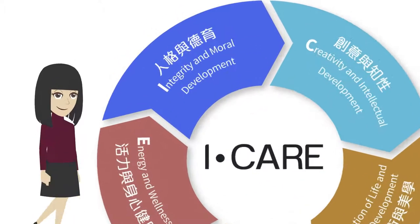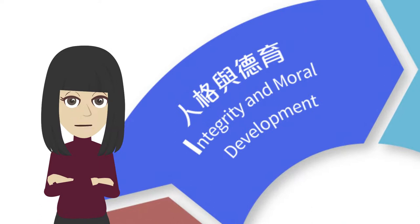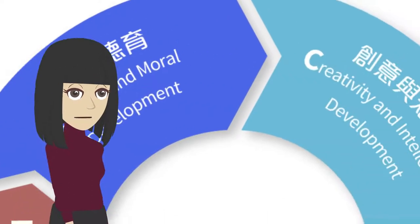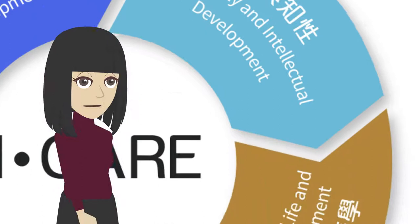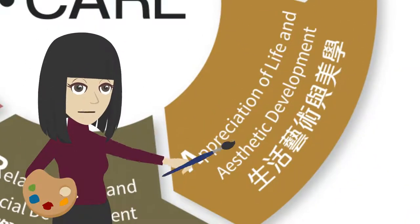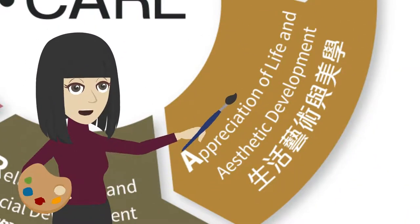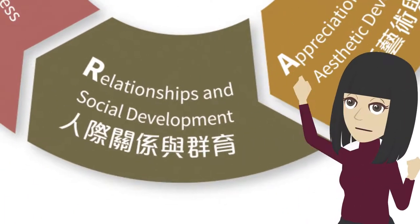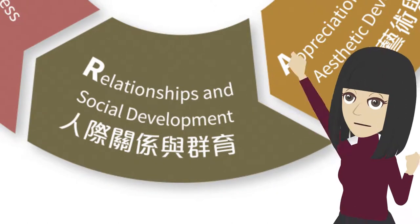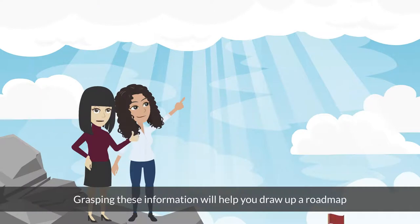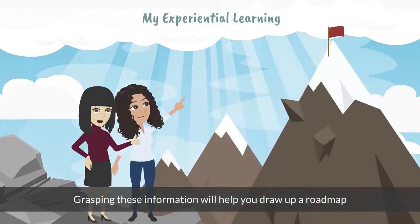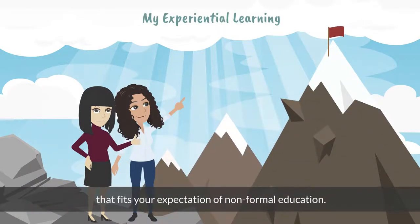iCare denotes: I — Integrity and moral development; C — Creativity and intellectual development; A — Appreciation of life and aesthetic development; R — Relationships and social development; E — Energy and wellness. Grasping this information will help you draw up a roadmap that fits your expectation of non-formal education.